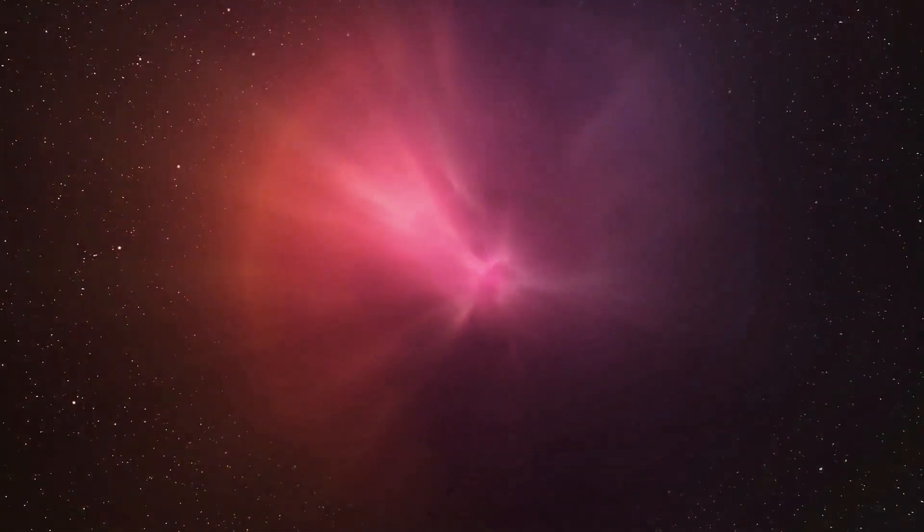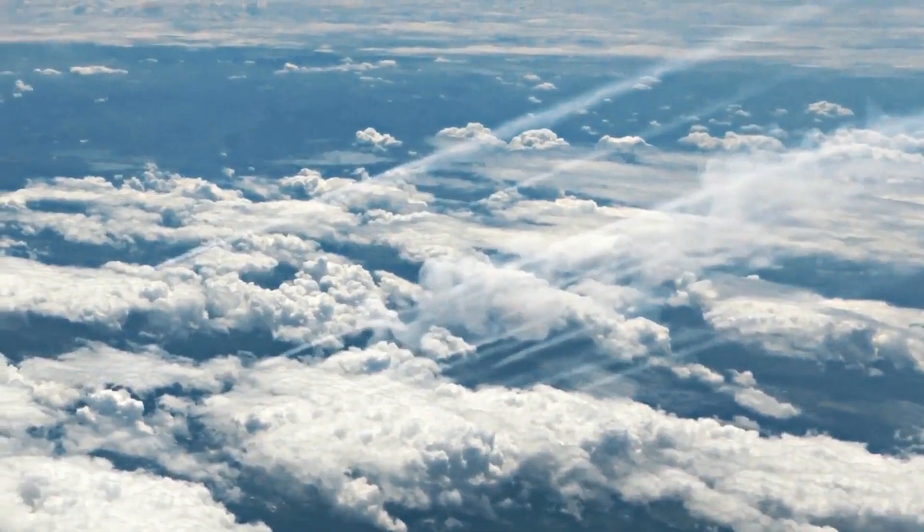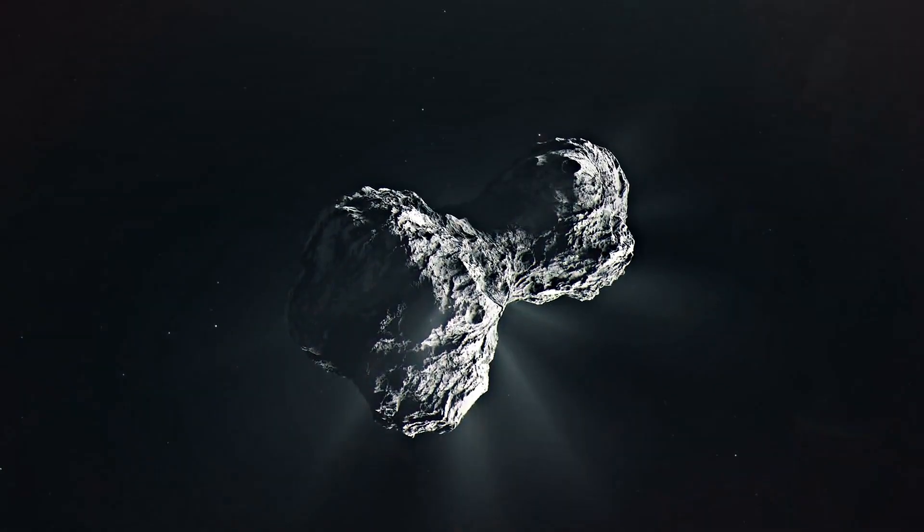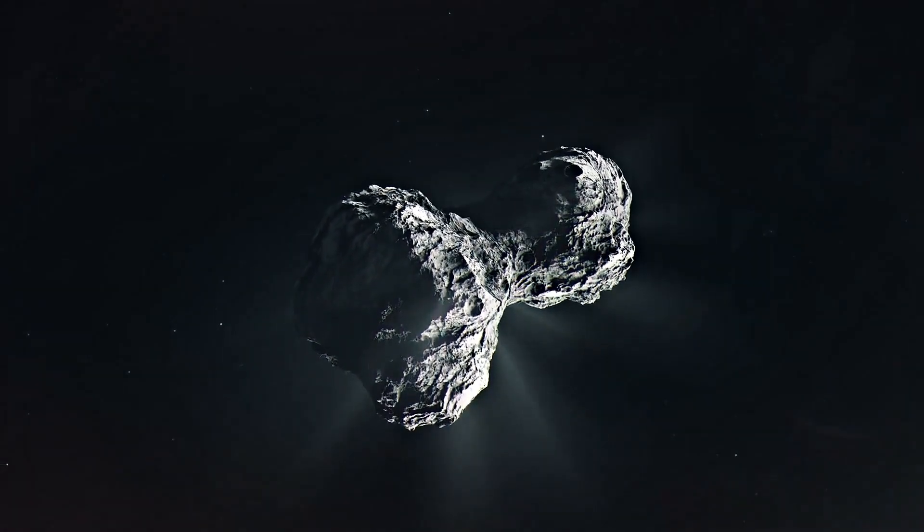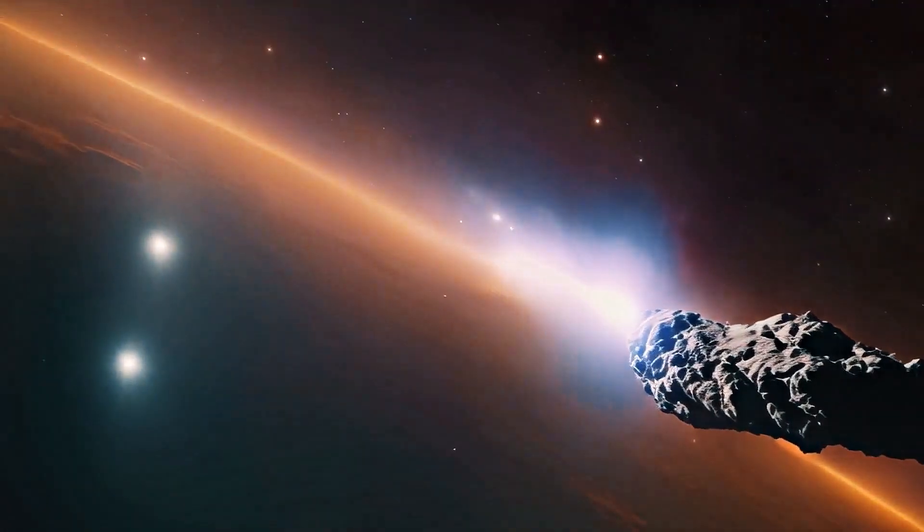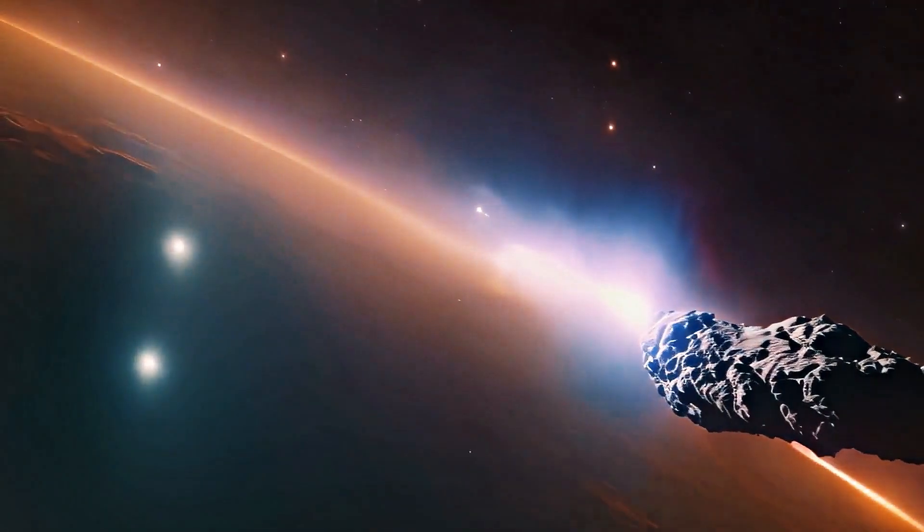The boundary where carbon dioxide freezes into solid ice. So when we observe 3i Atlas, we're essentially looking at a time capsule from another solar system, a frozen record of alien chemistry that hasn't changed for billions of years.